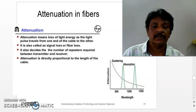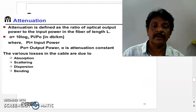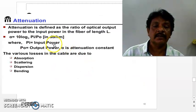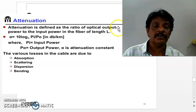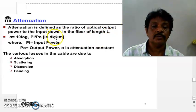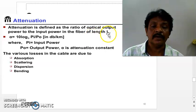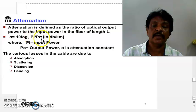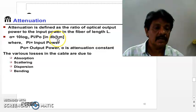On what factors is the attenuation defined? This attenuation is defined as the ratio of optical output to the input in the optical fiber length, so that alpha is equal to 10 log Pi by Po, where Pi means input power, Po means output power, measured in decibels per kilometer.